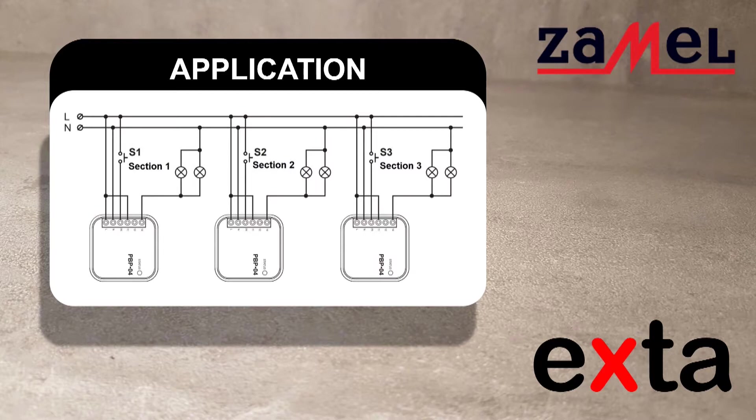Bistable relays on the shown diagram perform the function of lighting control in the room with unipolar buttons. Buttons S1, S2, and S3 independently control the lighting sections one, two, and three.